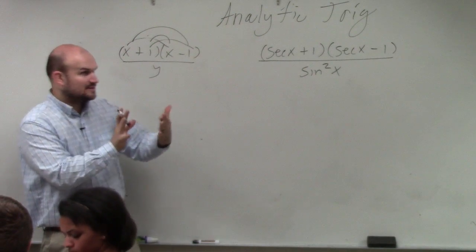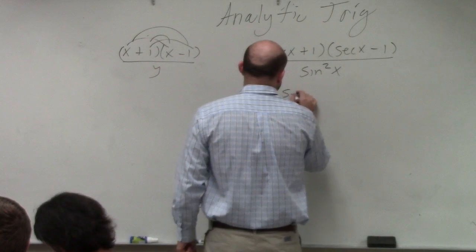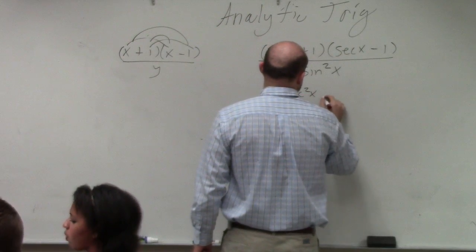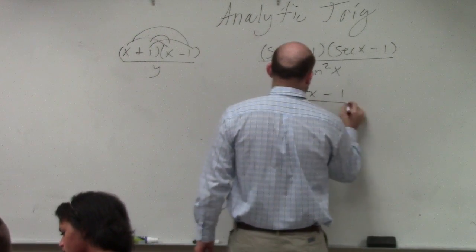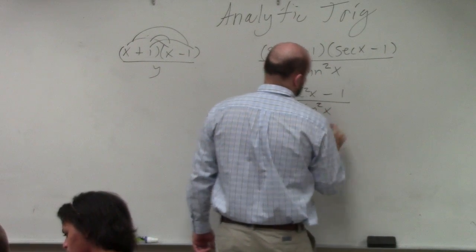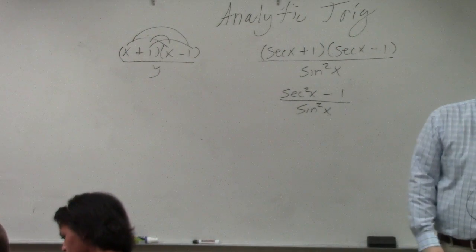But everybody understands the middle terms cancel out, right? So this gives us sec²x - 1 over sin²x. Correct?